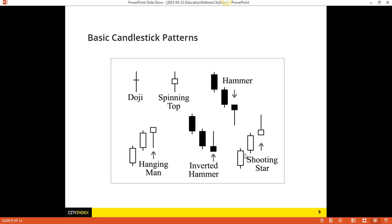My two favorite of all the candlesticks I look at on a daily basis are the hammer and the shooting star. The hammer is simply: after a move down in price, we have this last candle — the hammer candle — which forms a small body towards the top end of the candlestick, and then the price moves all the way down, hits a low, and then comes all the way back to close near where it opened.